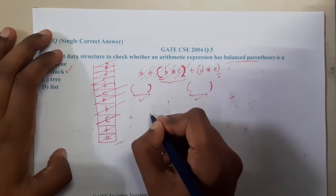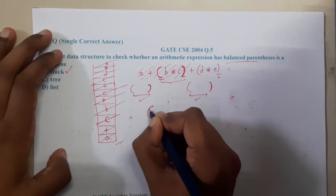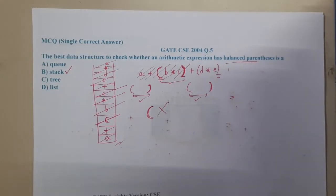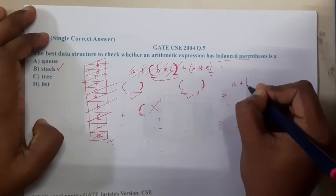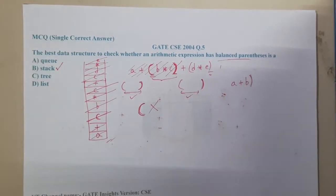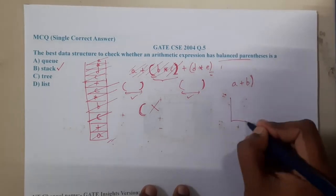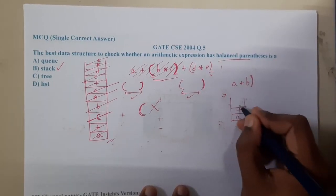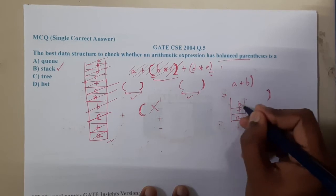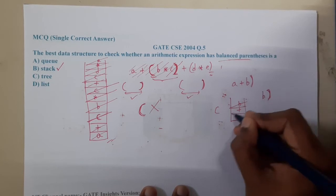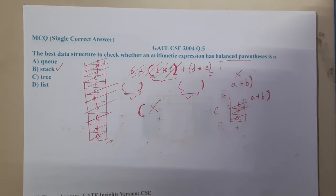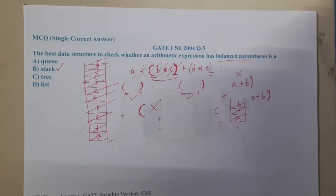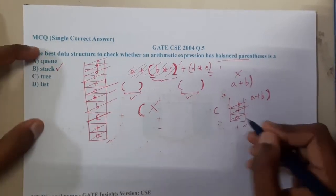When popping, if you find a leftover open bracket, the expression is not balanced. Similarly, if you get a close bracket in the expression — for example 'a + b )' — you start popping 'b', '+', 'a' but there is no open bracket found, so the expression is not balanced. This is how the stack handles both unbalanced cases.